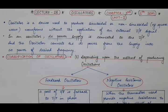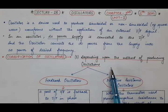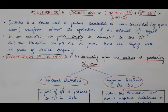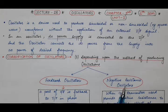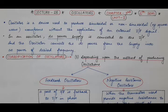Now we will discuss the various categories into which oscillators are divided. The first category is classification of oscillators depending upon the method of producing oscillations. Depending upon that method, oscillators are divided into two categories: feedback oscillators and negative resistance oscillators. In feedback oscillators, a part of the output signal is fed back to the input signal, and that feedback portion is in phase with the input signal — meaning the feedback is positive.